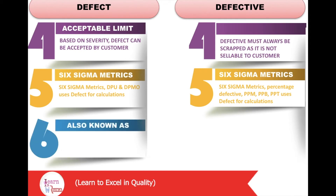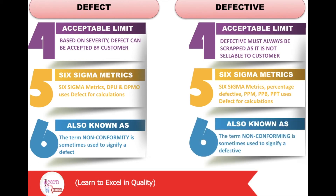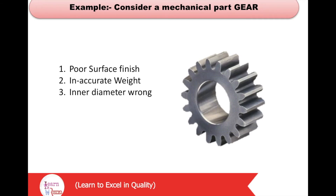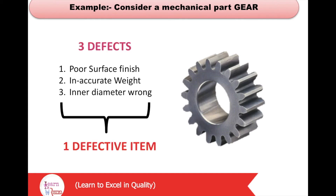The term nonconformity is sometimes used to signify a defect, whereas the term nonconforming is sometimes used to signify a defective. For example, consider a mechanical part — a gear — with three defects: poor surface finish, inaccurate weight, and wrong inner diameter. These three defects together lead to one defective item, the gear — meaning three defects in one defective item.